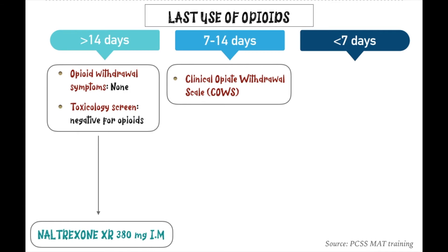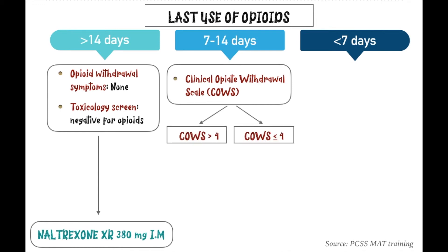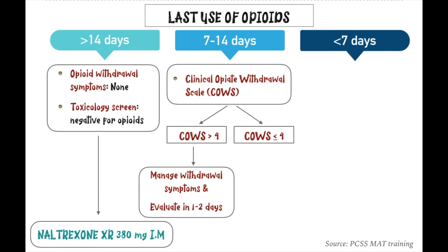You add up the criteria scores, and whether the COWS number is more than four or less than four will decide your next step. If COWS is more than four, the patient is at risk of withdrawal or is currently in withdrawal. You manage the withdrawal symptoms first, ask them to come back in one to two days, and then re-evaluate.